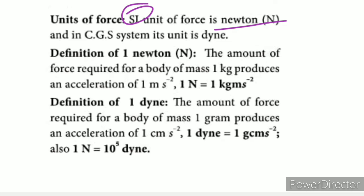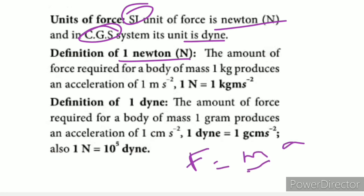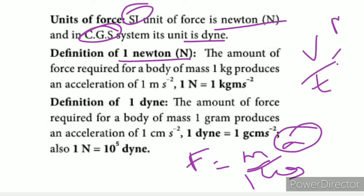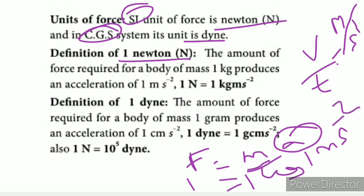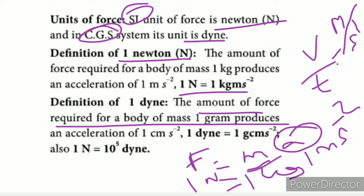Now we will find out the unit of force. The SI unit of force is the newton. The CGS unit is the dyne. The unit of force is defined from F equals ma: the acceleration is velocity divided by time, and the unit follows from kilogram, meter, and second.